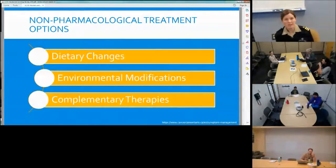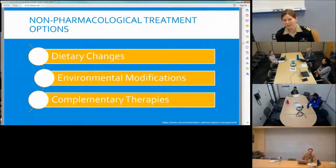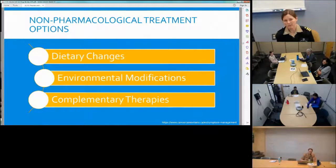When going to treat nausea, it's always important to consider non-pharmacologic therapies first. Dietary changes — can we limit spicy or salty foods? Is the person willing to try small, frequent meals of five to six instead of three large meals? Environmentally, can they wear loose clothing, rinse their mouth before eating, and eliminate strong odors? Complementary therapies such as acupuncture, hypnosis, and visualization are also options.